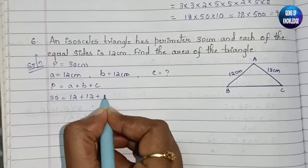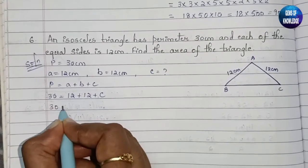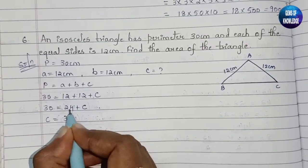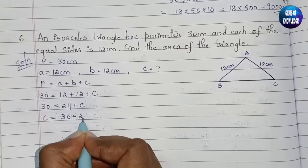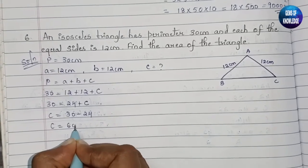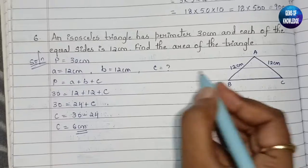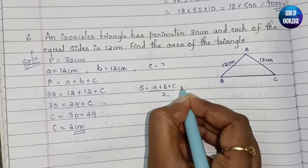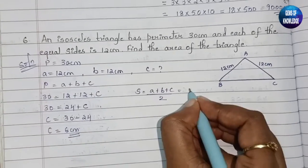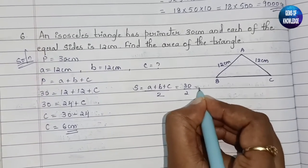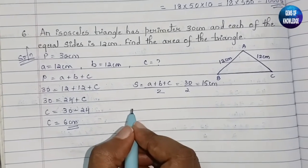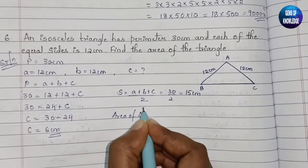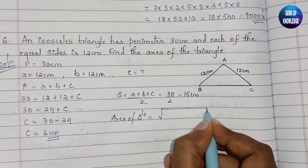Using the perimeter: a plus b plus c equals 30. So 12 plus 12 plus c equals 30, giving 24 plus c equals 30, so c equals 6 centimeter. Then s equals (a plus b plus c) divided by 2 equals 30 divided by 2 equals 15 centimeter.